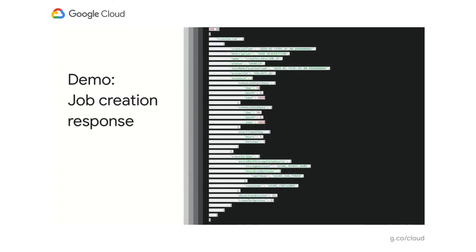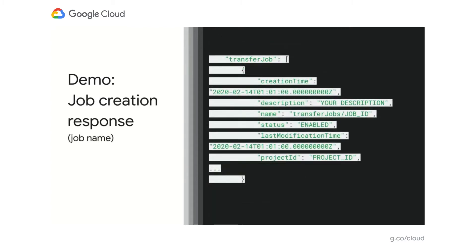After you submit a job, you'll get a response. Most of that response is the config you provided played back to you, but there are some important parts to highlight. You'll see standard metadata such as when the job configuration resource was created, and we also include the job name — a unique identifier at the project level that you can use to make subsequent calls, for instance to check if the job is still running or what operations have been executed.